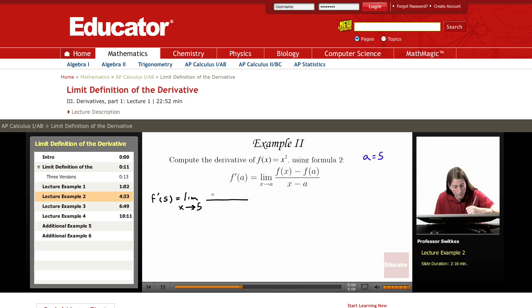So the limit as x approaches 5 of f of x minus f of a, well f of x is x squared, a is 5 and so f of 5 here is 5 squared or 25, divided by x minus a so we're dividing by x minus 5. Now our job is to simplify this fraction and then take the limit as x approaches 5.